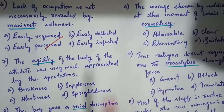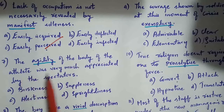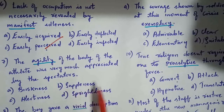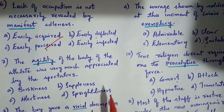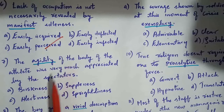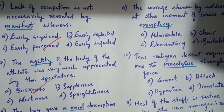Next question is: the agility of the body of the athlete was very much appreciated by the spectators. The options are: briskness, suppleness, alertness, sprightliness. The alternate word for 'agility' is option A, briskness.